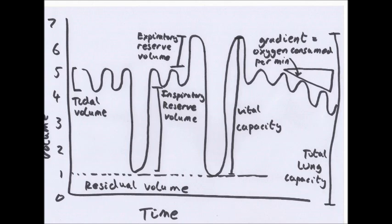Dead space is the area in the bronchioles, bronchi, and trachea where there is no gas exchange between the air — this is not shown in the lung capacity trace. Inspiratory reserve volume is how much air can be breathed in over and above the normal tidal volume. Expiratory reserve volume is the amount of air you can breathe out after you've already breathed out the normal tidal volume.